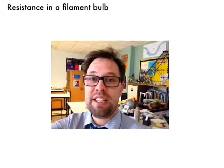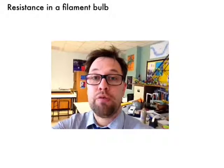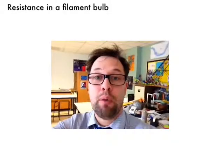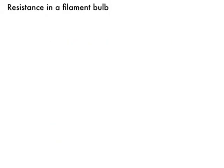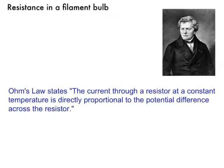Hi, Mr. Peppel here and in this little video I'm going to talk to you a little bit about electrical resistance in a filament light bulb. So previously we have found out about Ohm's law which was first stated by this guy George Ohm. What Ohm's law says is that the current through a resistor at a constant temperature is directly proportional to the potential difference across the resistor.